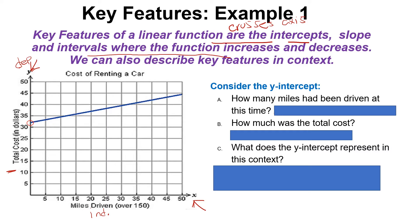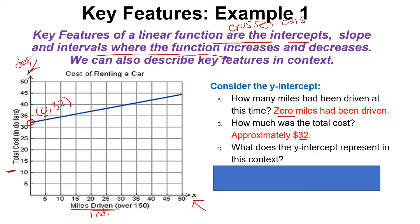Looking at this example, let's look at a. It says consider the y-intercept. So the y-intercept is right here around this red circle and that is the ordered pair zero - I'm going to say 32, it's closer to the 30 - so (0, 32). It says how many miles have been driven at this time and so it would be zero miles because x is represented by zero and x is our miles driven. How much was the total cost? The total cost was about $32 because that is represented by our y value right here because y is represented by our cost in dollars.